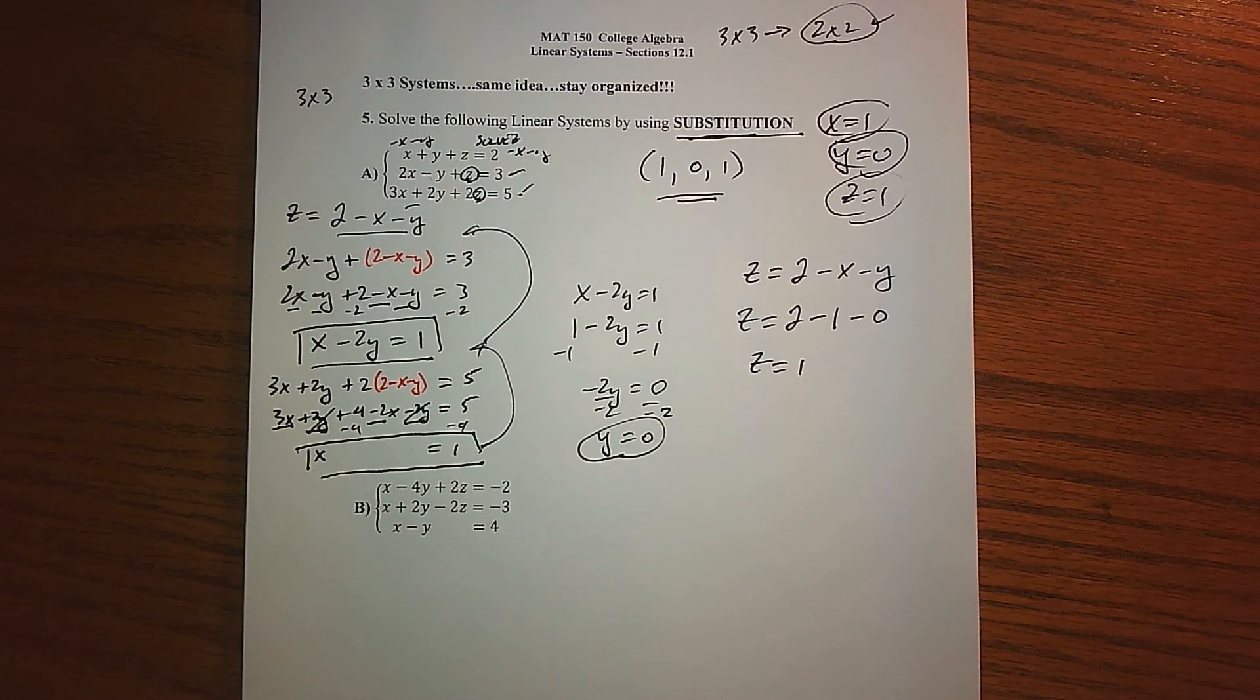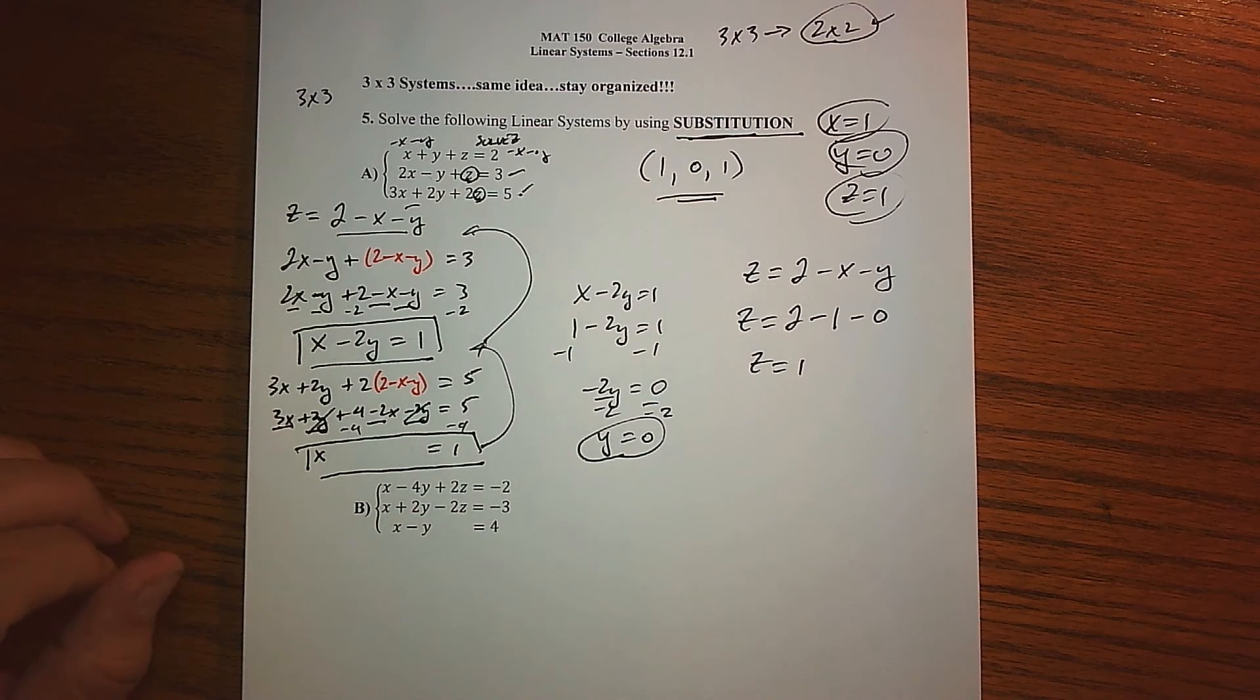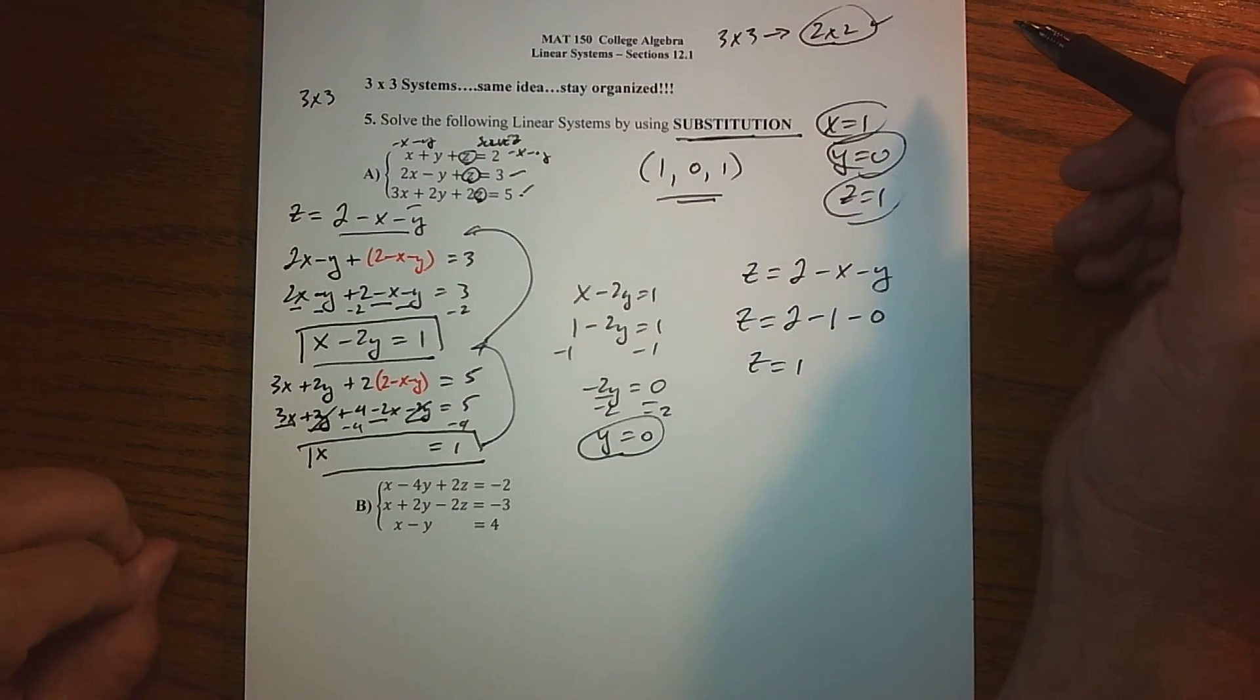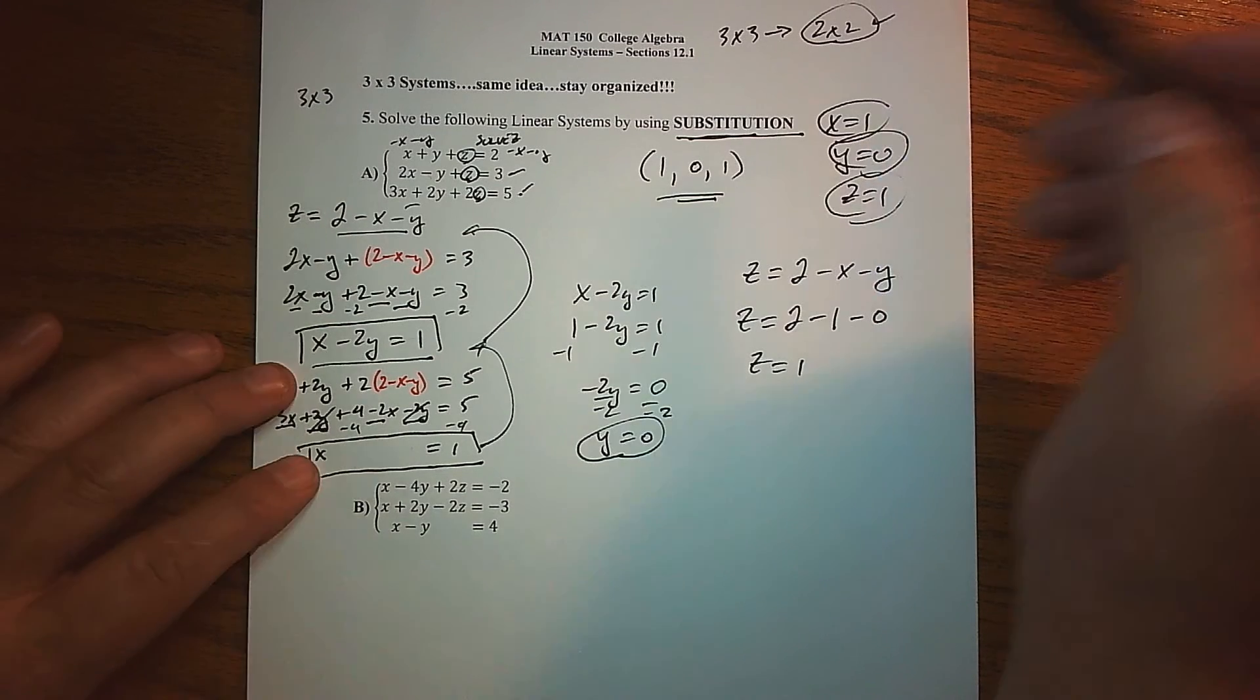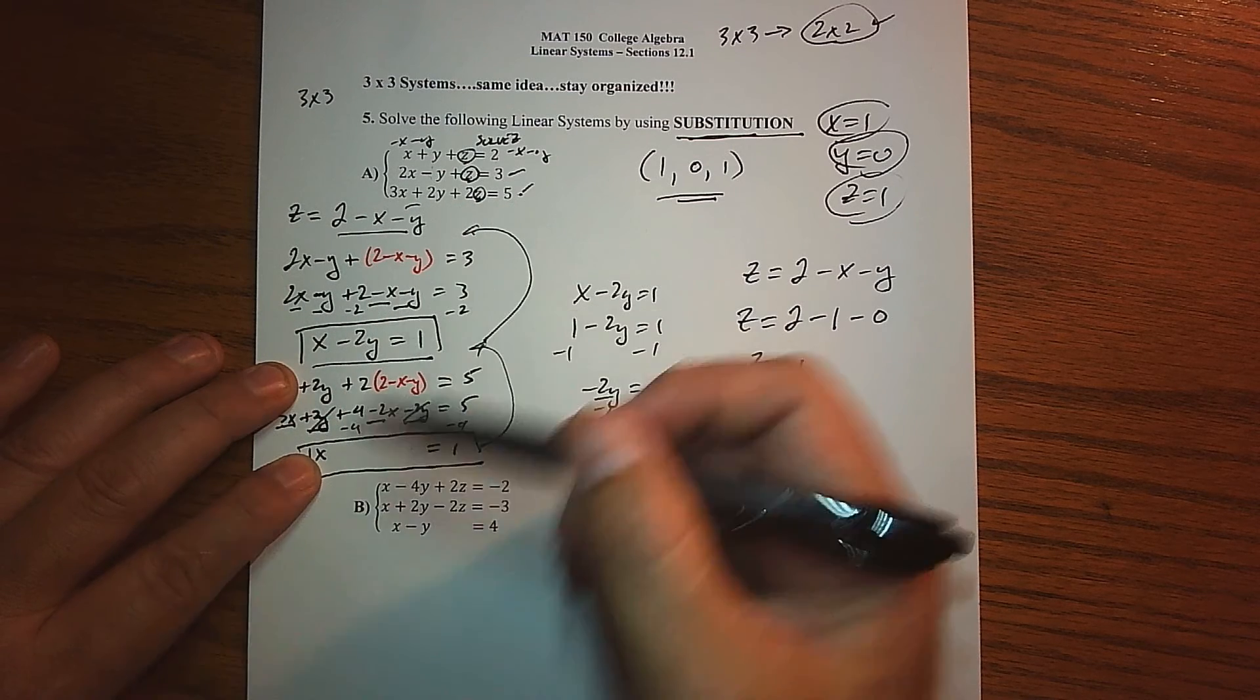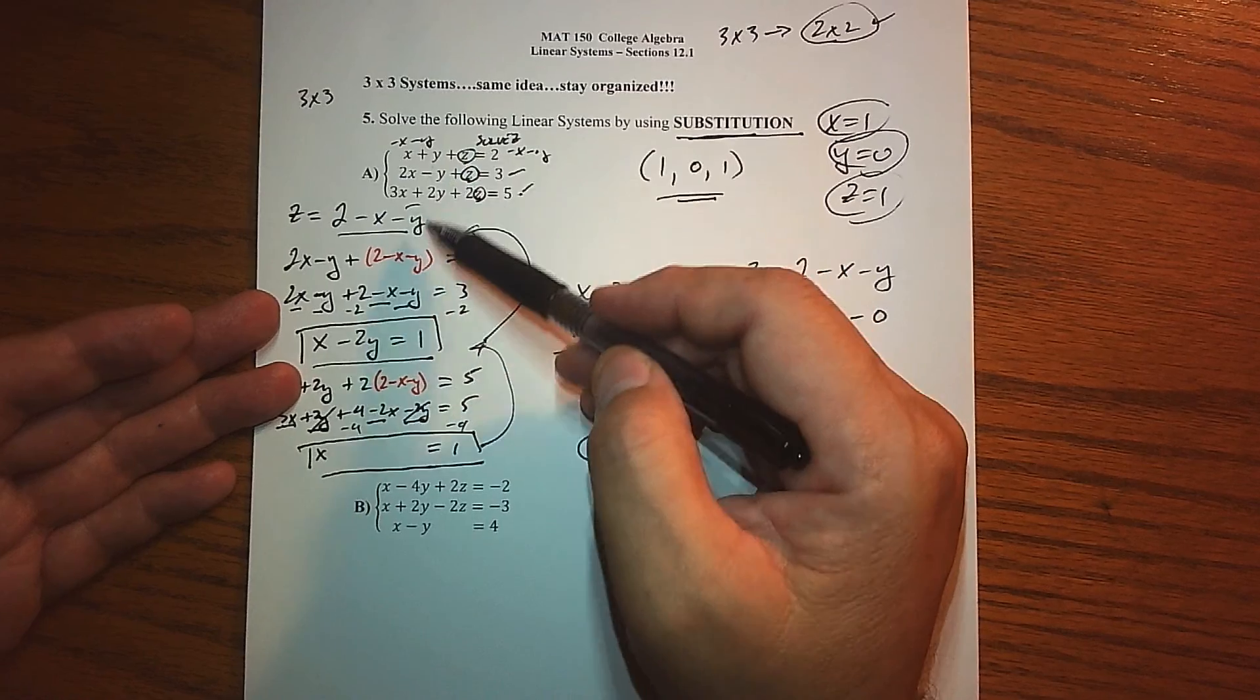That is the solution to this system. Like I said, we got very lucky. I imagine if we chose to solve for one of the other variables, we probably wouldn't have been so lucky. We truly would have ended with a 2 by 2. Checking: 1 plus 0 plus 1 is 2, 2 minus 0 plus 1 is 3, and 3 plus 0 plus 2 is 5. So it does in fact check out. I know it's the solution.